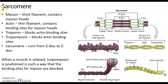On this slide we're going to look at one sarcomere. Recall from the last video that a sarcomere is one unit of contraction in a myofilament. A myofilament is one cylindrical unit of many inside a muscle fiber, which is a muscle cell. Here's one sarcomere from Z line to Z line.